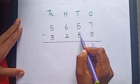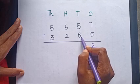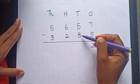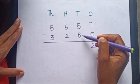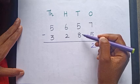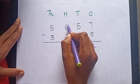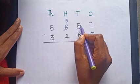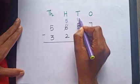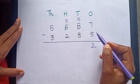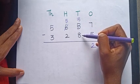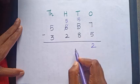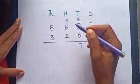5 minus 8 is equal to? We cannot subtract 8 from 5, so we will borrow 1 from the hundreds column. 6 becomes 5, and 5 becomes 15. Now 15 minus 8 is equal to? Yes, very good, 7.